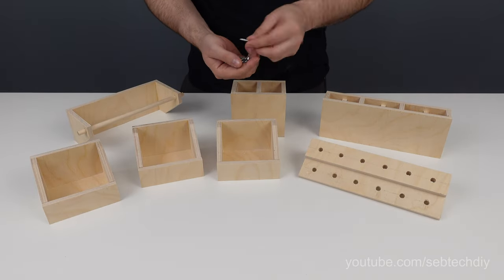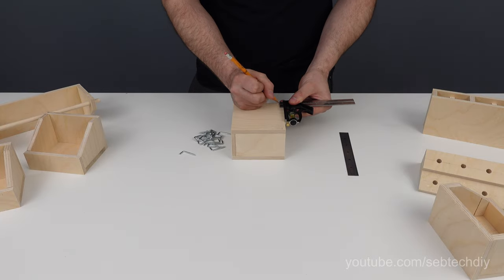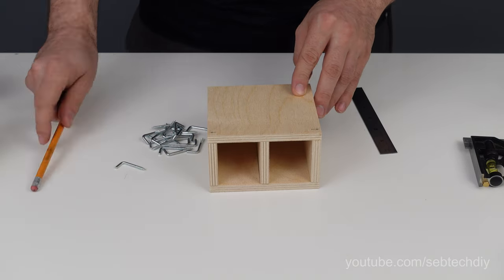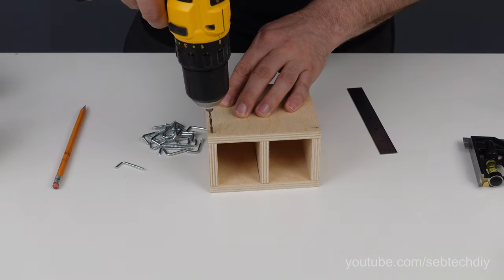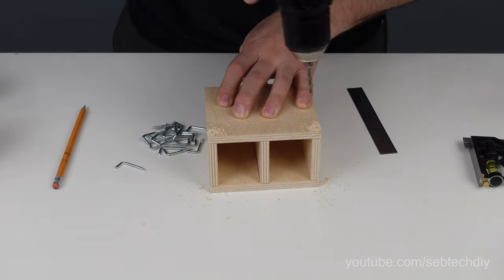I start with my L hooks that I will screw on the back of my organizer. I draw two lines at 1/4 of an inch from the top. Then I make another mark on this line at 3/16 of an inch from the side. Then I drill a pilot hole on both sides and this will prevent the plywood from splitting.